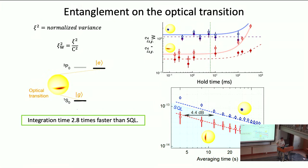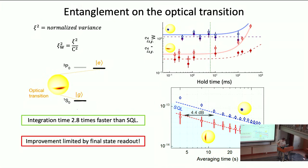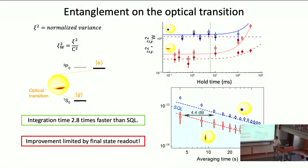To put it in perspective: if you need to measure something with certain accuracy and it would take 60 years, that's a whole-life project — but with this improvement in integration time, it becomes just a PhD project. The final performance was limited by our final state readout. What's plotted is delta nu over nu on the vertical axis.